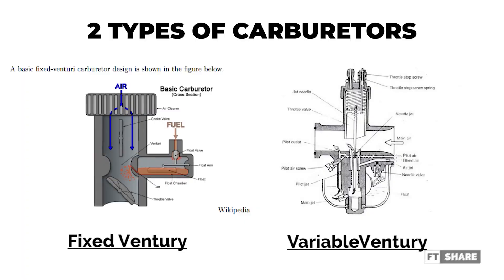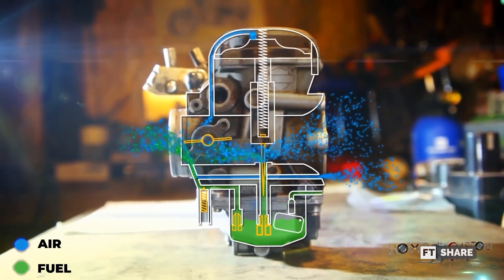There are two types of carburetors, fixed venturi and variable venturi. In a fixed venturi carburetor, the diameter of the venturi cannot be changed. The variable venturi carburetor, on the other hand, is widely used in small engines.